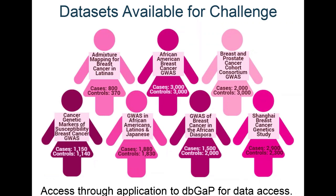Shown in this diagram are the seven datasets made available for the breast cancer challenge within dbGaP. Four of these datasets were not previously available in dbGaP before the challenge, so early in the process we reached our goal to broaden data sharing. We also have to thank dbGaP for the work they did to help get these datasets ready and make them available.